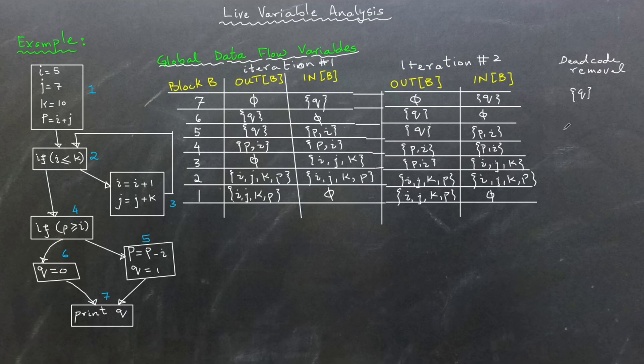In block 5, the in-set contains p and i and the out-set does not contain either of these variables. Hence, both p and i can be safely removed at the exit of block 5. For block 3, the variables i, j, k are part of the in-set. However, j and k are not included in the out-set, meaning they become dead after the block's end. Therefore, j and k can be removed at the exit of block 3. But i cannot be removed because it remains live beyond this point.